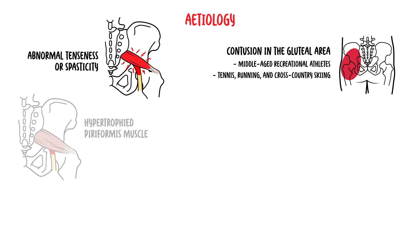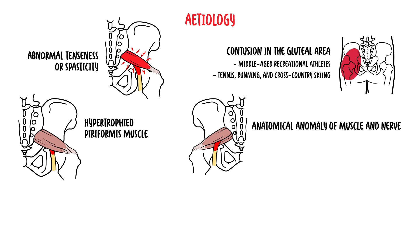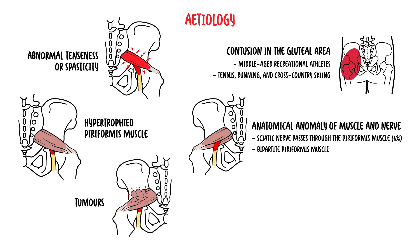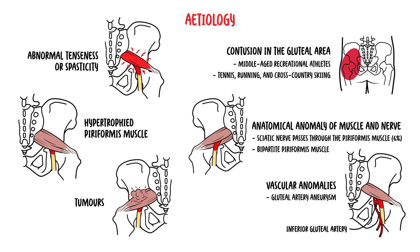Another cause is hypertrophy of the piriformis muscle, which could compress the sciatic nerve, and this can occur in athletes. Anatomical anomaly of the muscle and nerve can also cause piriformis syndrome — in about 6% of the population, the sciatic nerve passes right through the piriformis muscle. There is also what's called a bipartite piriformis muscle. Additionally, tumours invading directly into the piriformis can obstruct the sciatic nerve, and vascular anomalies such as gluteal artery aneurysms can also cause features of piriformis syndrome.